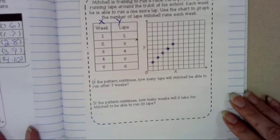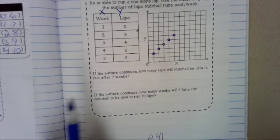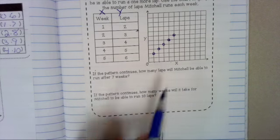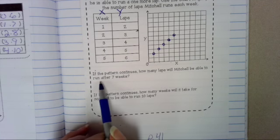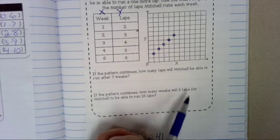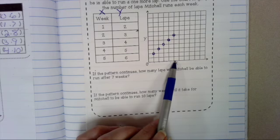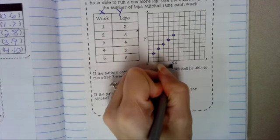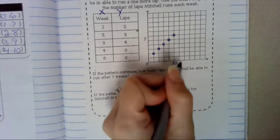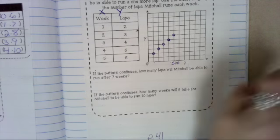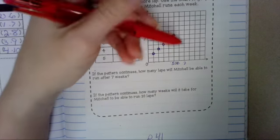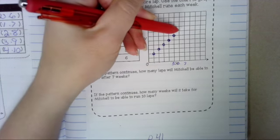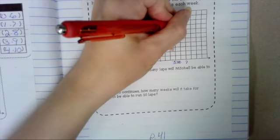Now, let's answer some questions about this problem. If the pattern continues, how many laps will Mitchell be able to run after 7 weeks? Well, right now, he's at 5 weeks. This is 5 weeks. I want to go to 7 weeks. So 5, 6, 7.